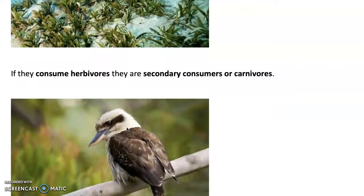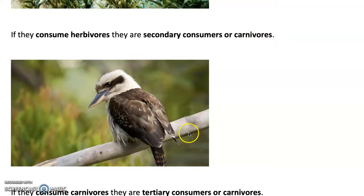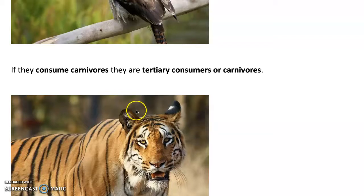If an organism consumes a herbivore, they are a secondary consumer, also known as a carnivore. So kookaburras are carnivores — if they consume herbivores, they are a secondary consumer, which is known as a carnivore.